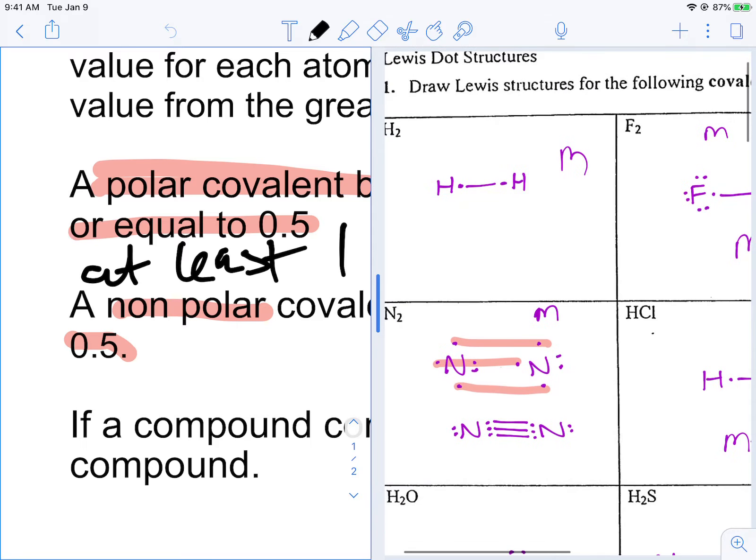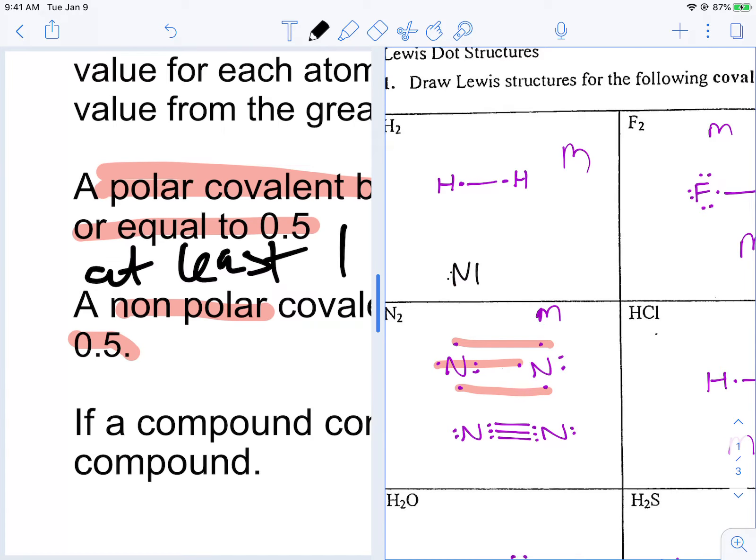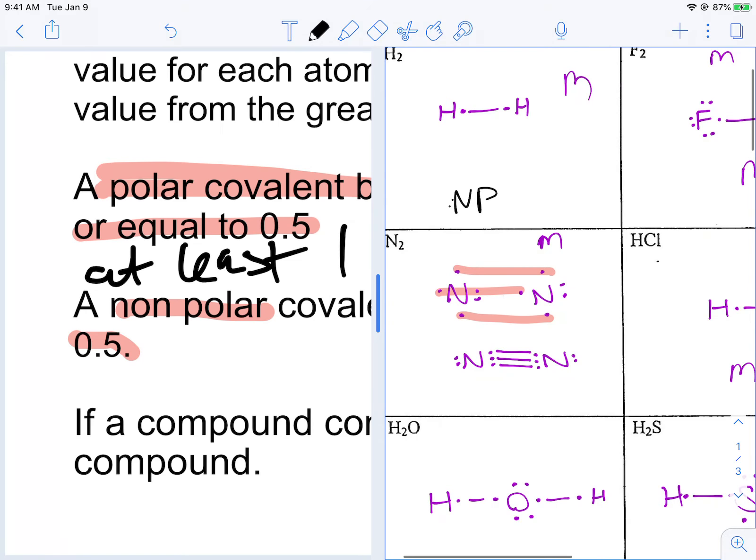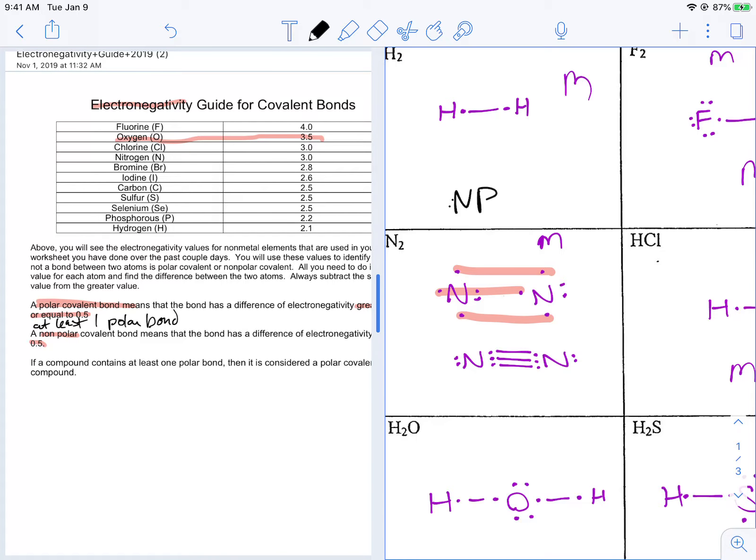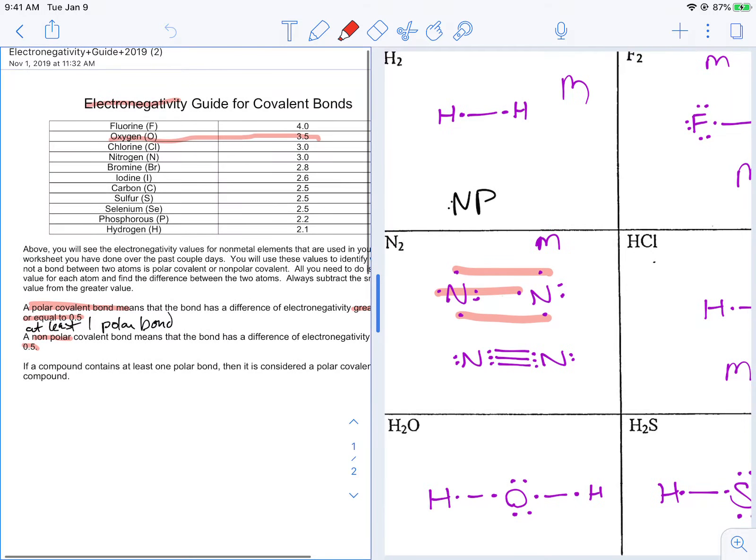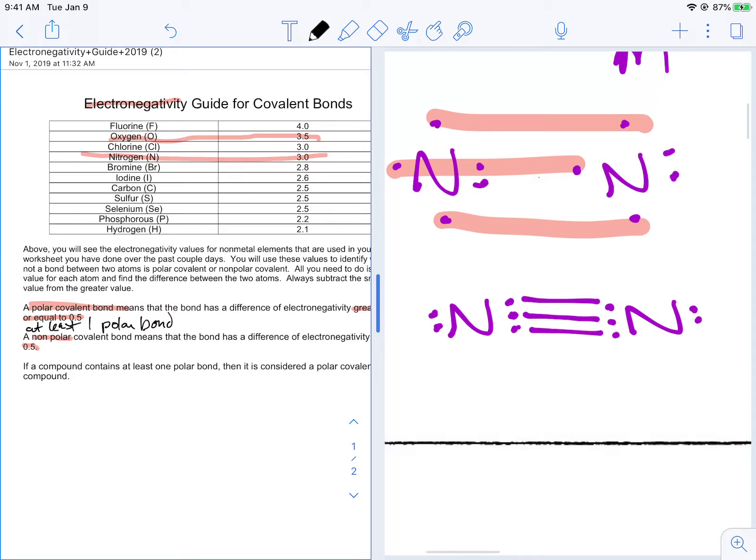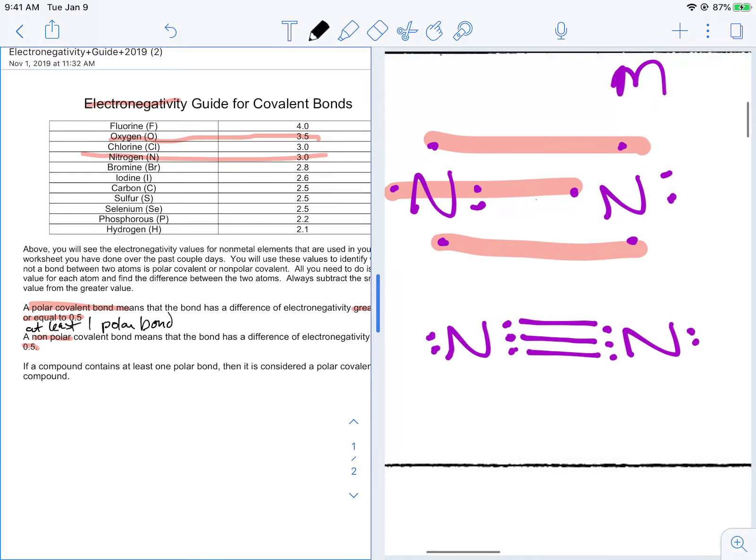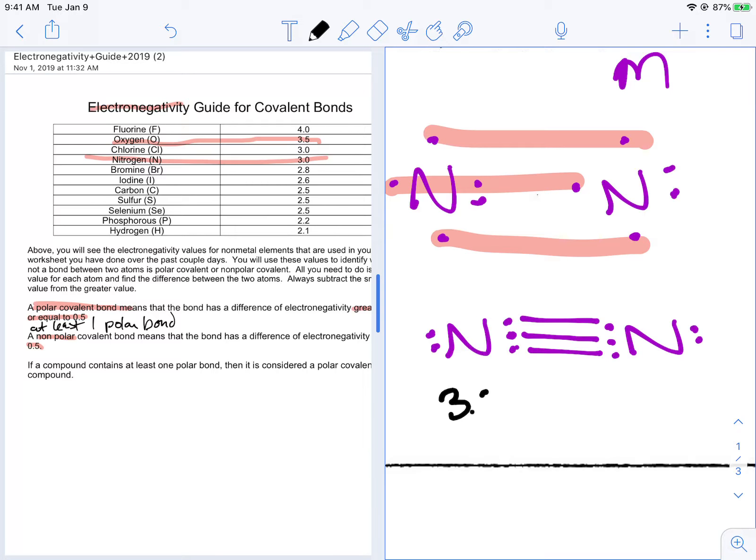And let's do some classification. H to H. We said that's non-polar. N to N. That's 3.0. So that tells you that these guys are pulling the same. So nobody's winning the tug of war here. So that's a 3.0 minus a 3.0. That's zero. You're below 0.5 with your answer, so that's non-polar.